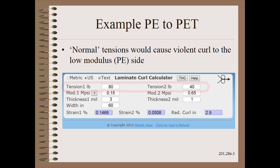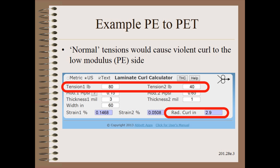Note that with ordinary tensions — the 10–25% of strength common in web handling — we would have violent curl to the PE side. Here, a small number for radius is worse curl.